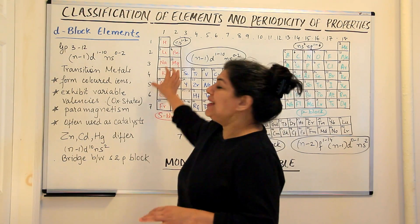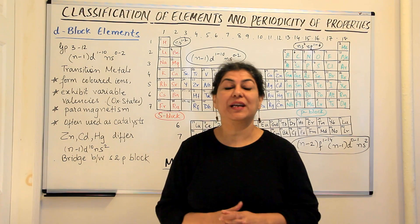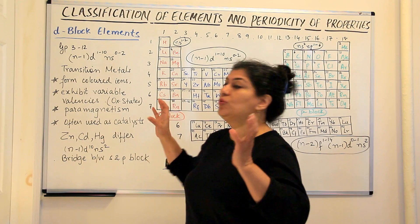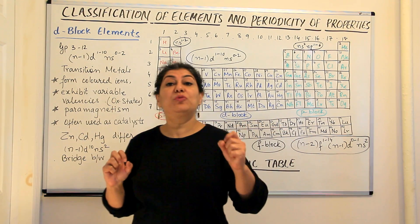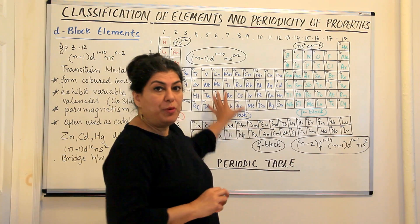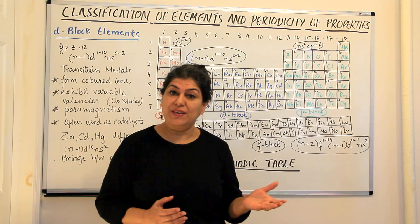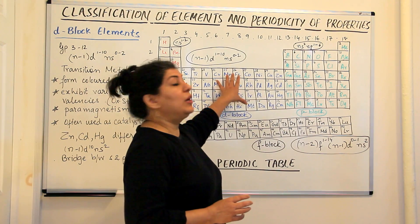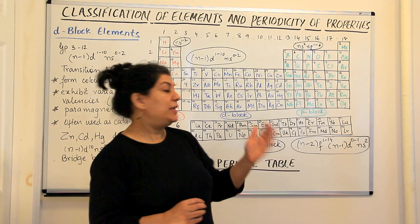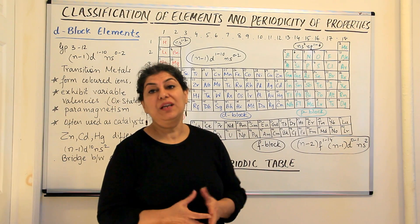The S and P block elements together are known as the representative elements because in these two categories, it is the outermost shell which is being filled up. But the transition metals or the D block elements and the F block elements, in these it is not the outermost shell that is being filled up. Rather in D block it is the penultimate shell that is one before the outermost shell, and in the F block it is two before the outermost shell which is being filled up.